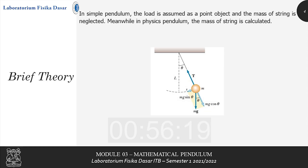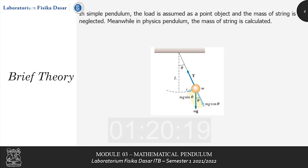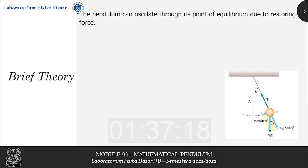A pendulum system is a mechanical system that consists of a certain load with a certain shape tied to a fulcrum with a string or rope. This pendulum system moves periodically, and this periodic movement can be categorized as simple harmonic motion. In simple or mathematical pendulums, the load is assumed as a point object and the mass of the string is neglected. In a physical pendulum, the mass of the string is calculated and there is also a contribution from the moment of inertia of the load. This pendulum system can oscillate through its point of equilibrium due to the availability of a restoring force.